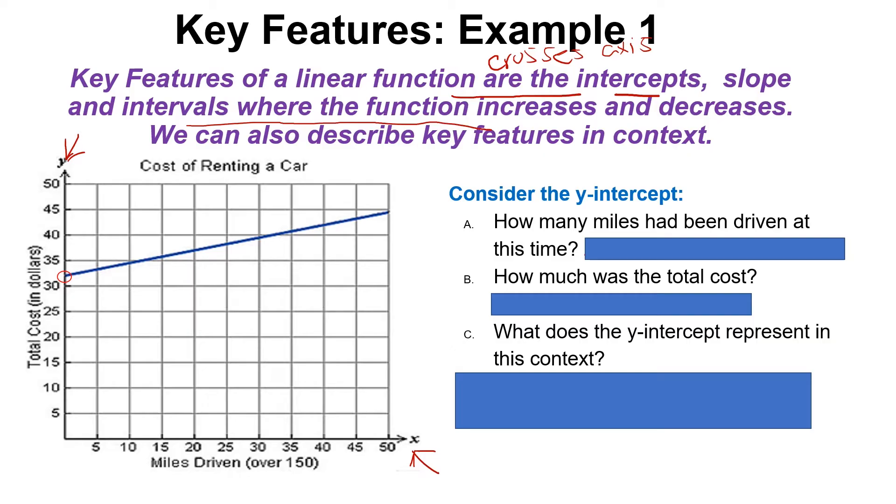Now looking at this graph here, it shows us how much it will cost to rent a car. So in this case, our y value represents the total cost and our x value represents the miles driven. Keep in mind or remember that our x value is the independent variable because the amount of money we pay depends on the amount of miles that we drive.